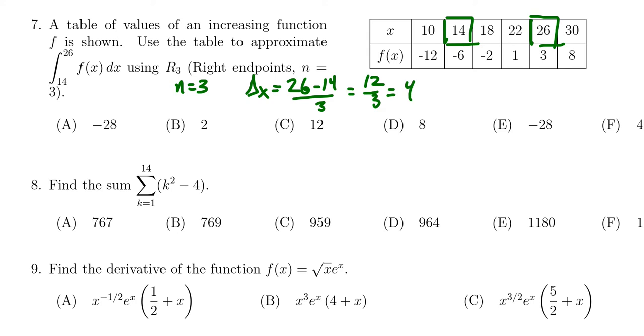There's going to be four steps between each of those places. If we take four steps from 14, we get 18. Four more steps gets us to 22, and four more steps gets us to 26. In terms of our number line, this is x0, x1, x2, and x3.